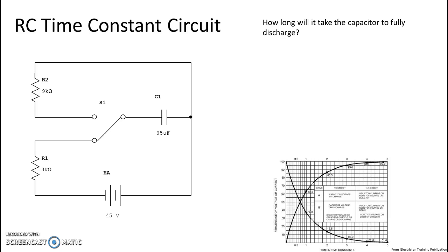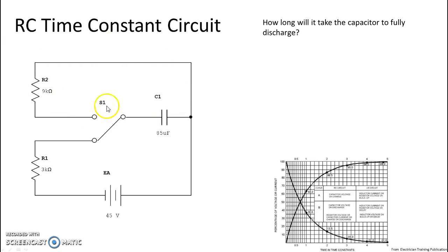This circuit is a little different — it has a separate discharge path. Your charge path is where both sides of the capacitor are connected to your power source. Your discharge path does not have both sides connected to the power source. That's how you can tell one from the other.